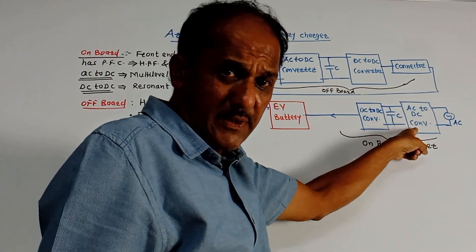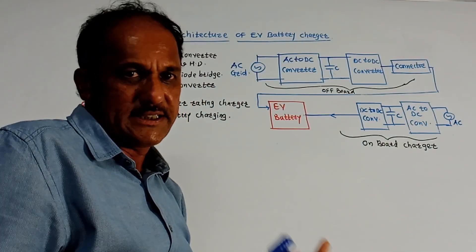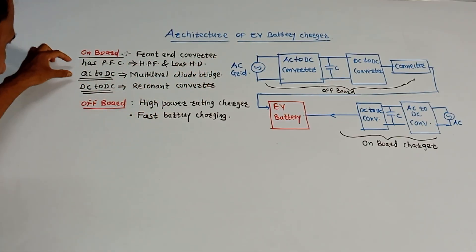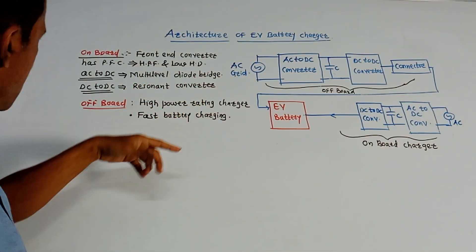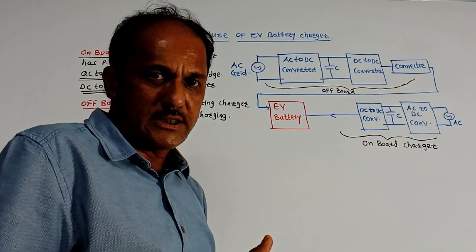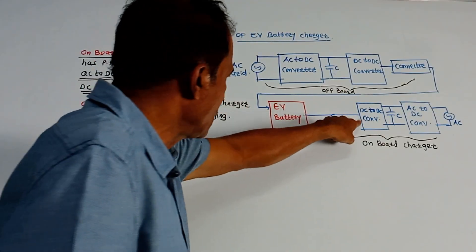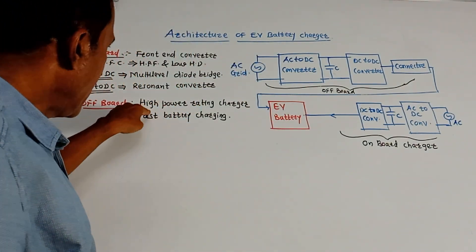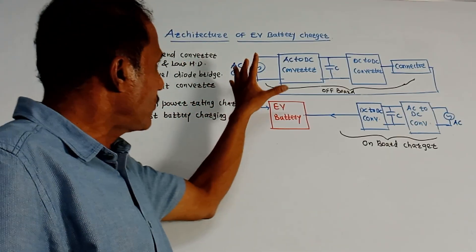The front-end converter handles AC-to-DC conversion in both cases and includes a power factor correction system, giving high power factor and low harmonic distortions. For AC-to-DC conversion, a multi-level diode bridge can be used for efficient operation. For DC-to-DC conversion, ZCS (zero current switching) or ZVS (zero voltage switching) resonant converters are used. In the off-board system, the blocks are the same but the charger is outside the vehicle, giving it a high power rating and enabling faster battery charging.